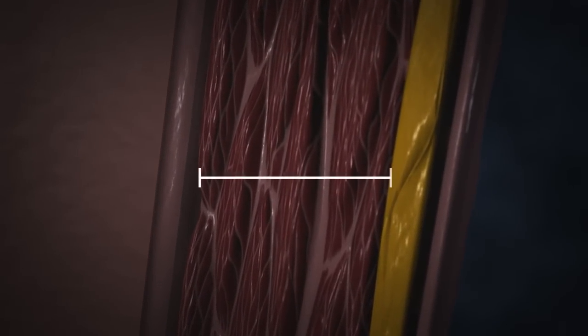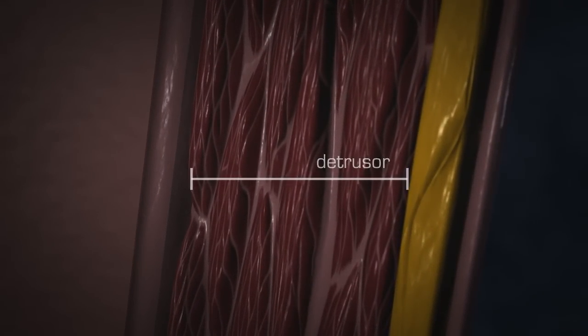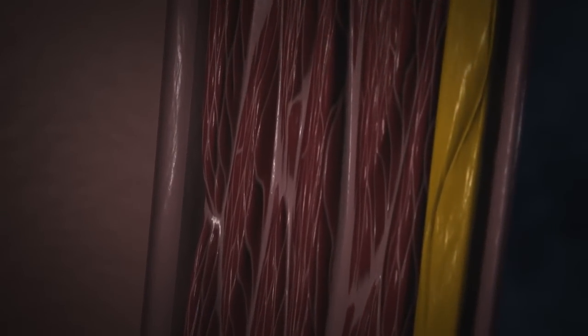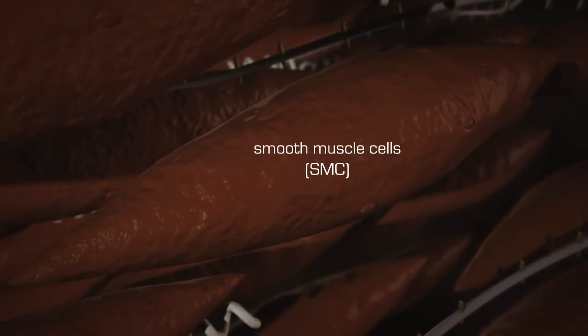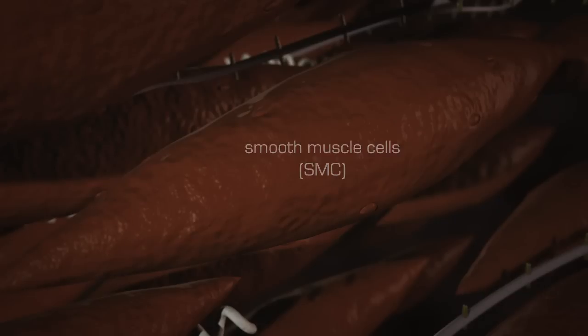The muscle layer or detrusor contributes to bladder elasticity. A network of smooth muscle cells and their surrounding extracellular matrix forms the detrusor muscle layer.